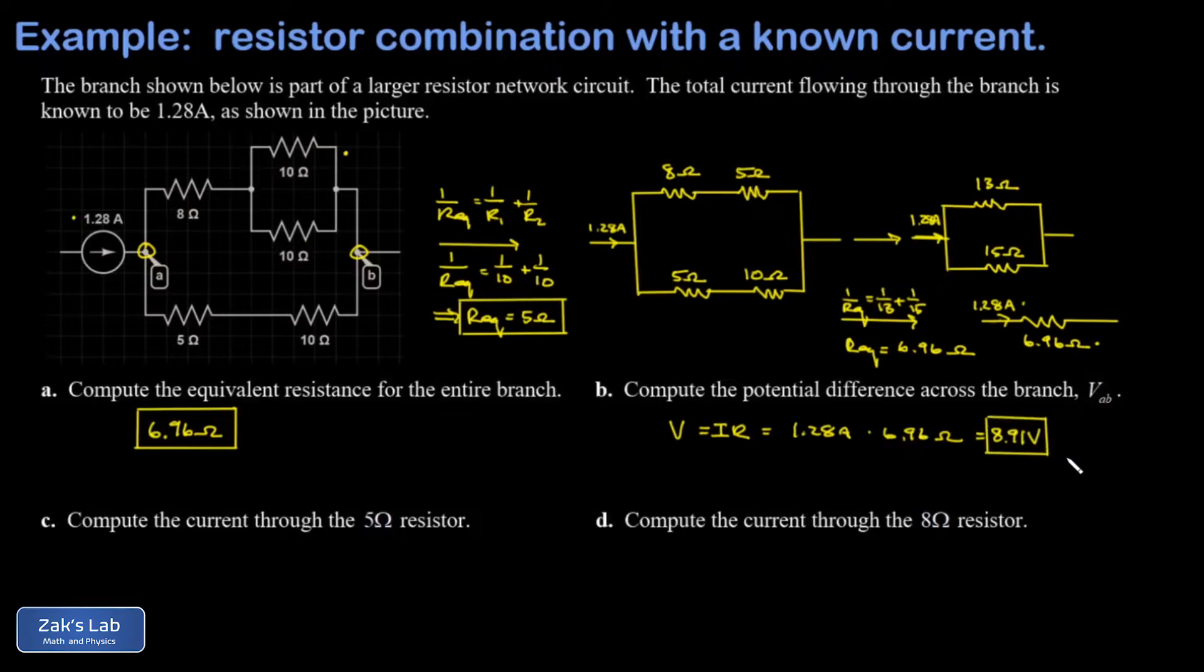Now that we know the potential difference across this branch we can answer part C. We want the current through the 5 ohm resistor, that's the one that was originally on the lower left. We know the potential difference across that branch is 8.91 volts and the total resistance of that lower branch was 15 ohms. This allows us to get the current through that branch and therefore the current through the 5 ohm resistor itself.